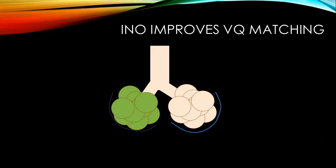So how do we deliver it directly to the lungs so it doesn't affect the rest of the body, and so it affects only ventilated units and not unventilated ones? We deliver it via the inhalation route. That way it only enters the ventilated units — the one on the right is ventilated, the one on the left is not. So it will only dilate the blood vessels of those ventilated units. That's why we call nitric oxide a selective vasodilator.